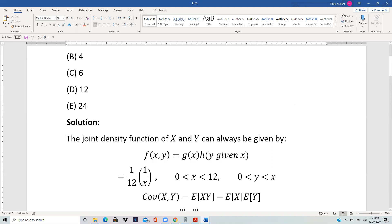It could also go the other way around. You can also have g(y) times h(x given y). So whatever you write first, then you do have the second given first. This is a general formula that is always true for a joint PDF.